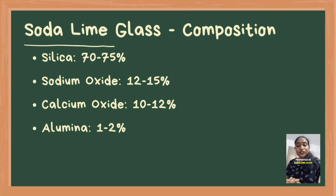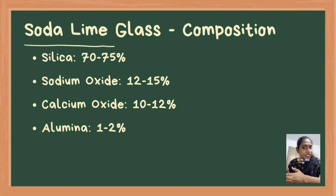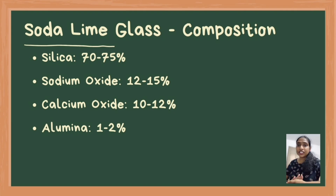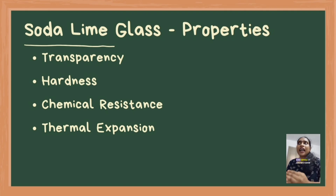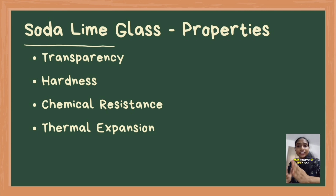Soda lime glass is the most commonly used type of glass, characterized by its composition of 70–75% silica (SiO2), 12–15% sodium oxide (Na2O), 10–12% calcium oxide (CaO), and 1–2% alumina (Al2O3). It exhibits high optical clarity, making it ideal for windows and containers. It is relatively hard and resistant to scratching, and while it shows good resistance to water and most chemicals, it can be etched by hydrofluoric acid. However, it has a high thermal expansion coefficient, making it prone to thermal shock.